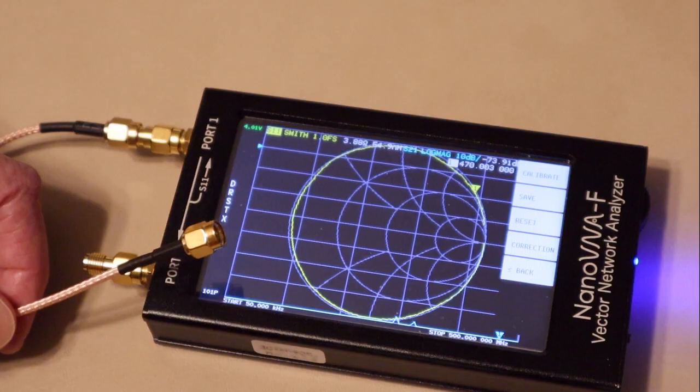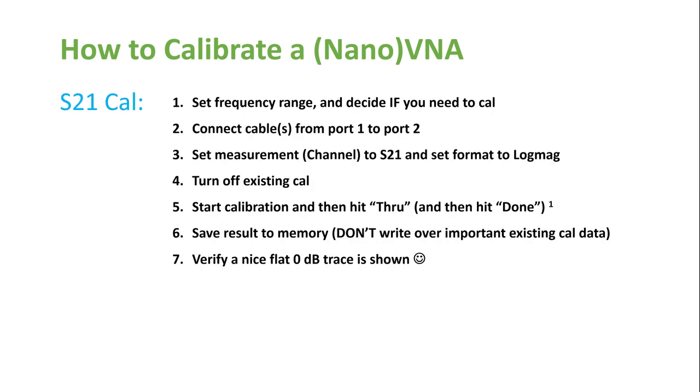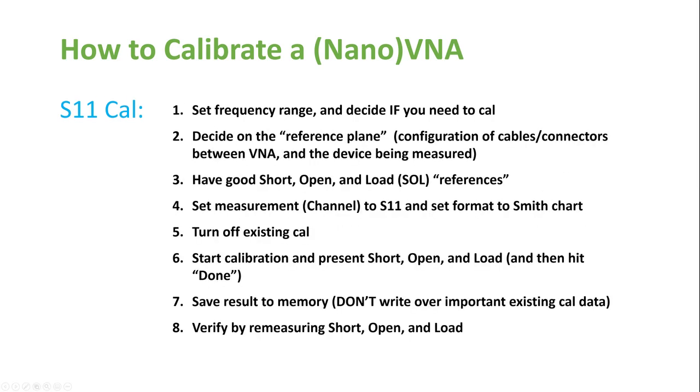But it only looks like a short circuit at one frequency. In our example, 250 megahertz with our 20 centimeter line. Now if you've got a nano VNA or any other VNA yourself, and a short piece of coax like this 20 centimeter line, I would encourage you to hook it up and try this. All right, let's talk about how to calibrate the vector network analyzer, or in our case, the nano VNA. In this video, we're just going to talk about a one-port calibration. In particular, right now, an S11 cal. Then we'll briefly go over S21 cal as well.